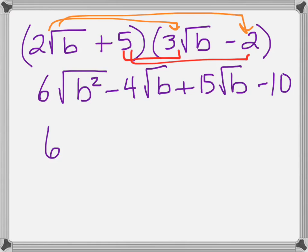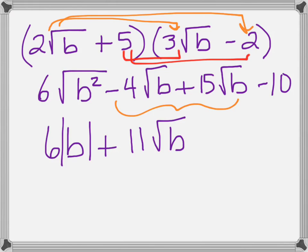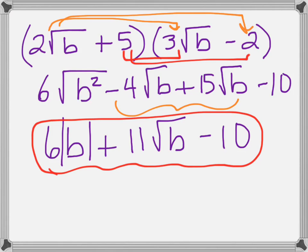We can simplify the first term because we know the square root of b squared is b, and we have to put the absolute value symbol around the b because the b value could be positive or negative. And then we combine our like terms, giving us plus 11 square roots of b and minus 10, giving us our final solution.